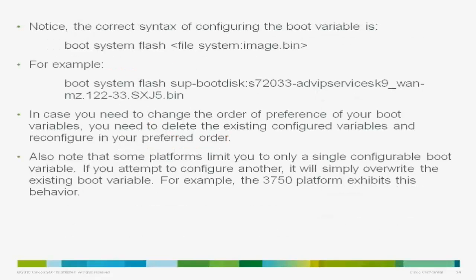This is the general syntax to use when configuring the boot variable: boot system flash, specify your file system, then specify the image — for example, boot system flash followed by the SXJ5.bin file. An important thing to remember is that certain platforms, like the 3750, do not allow more than one boot variable. If you try to configure another boot variable on those platforms, it simply overwrites the first one and you'll use the new one instead.